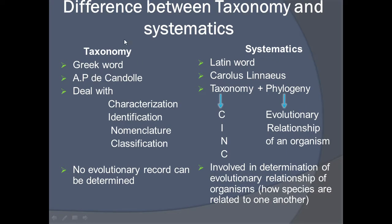Taxonomy deals with characterization, identification, nomenclature, and classification of organisms, whereas systematics deals with all the characteristics of taxonomy plus phylogeny. Phylogeny is the evolutionary relationship of organisms. Systematics is involved in determination of evolutionary relationships among organisms that are related to one another, whereas evolutionary records cannot be determined with the help of taxonomy alone.